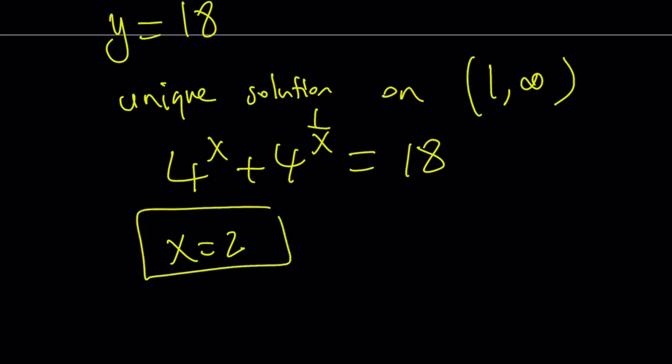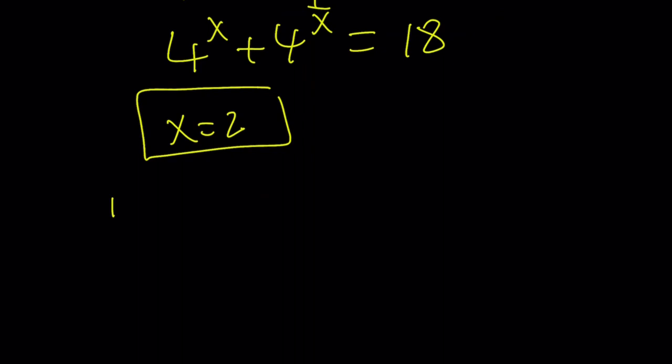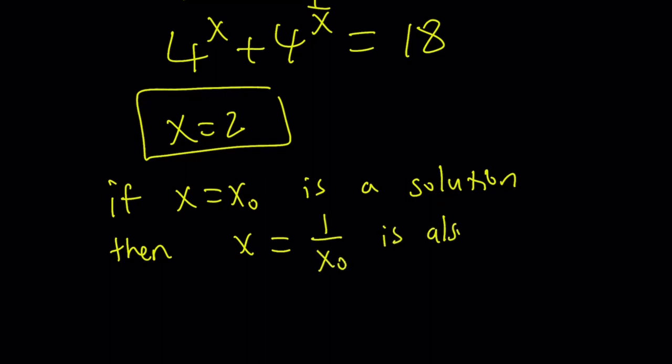So, x = 2 works, but is that the only solution? That is the million dollar question. So, here's the idea. If x = x₀ is a solution, then x = 1/x₀ is also a solution.